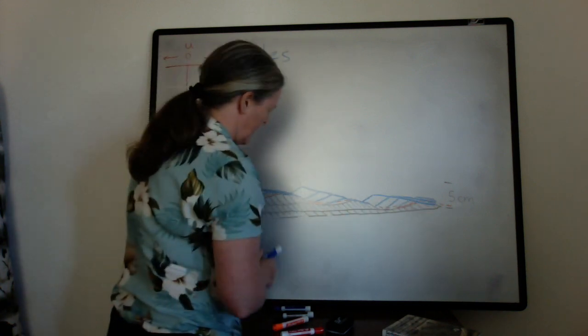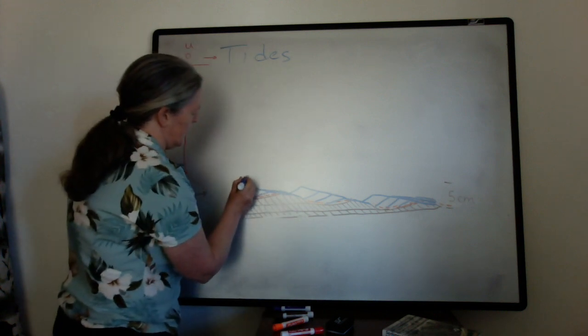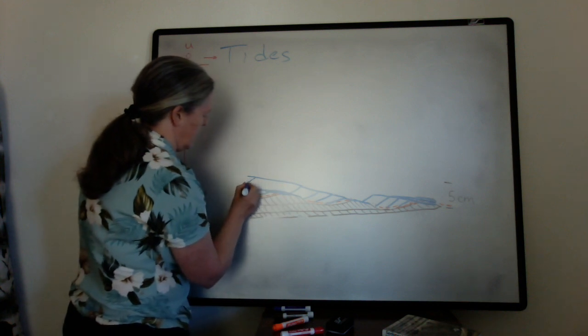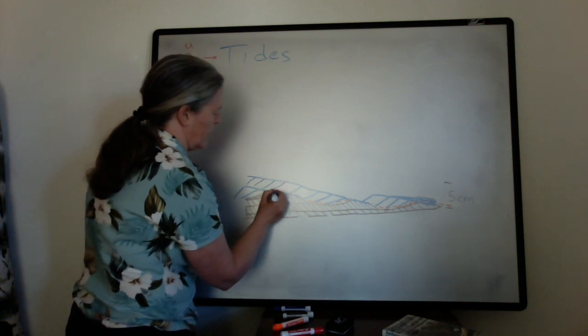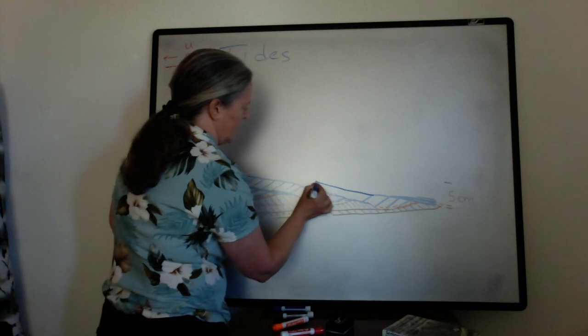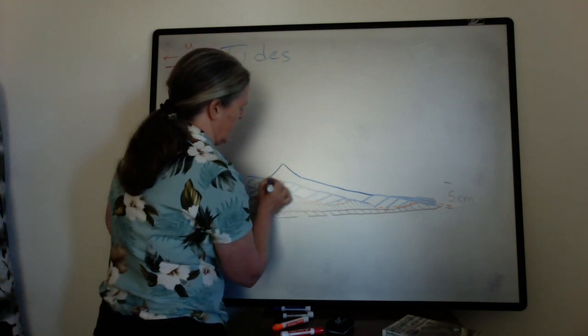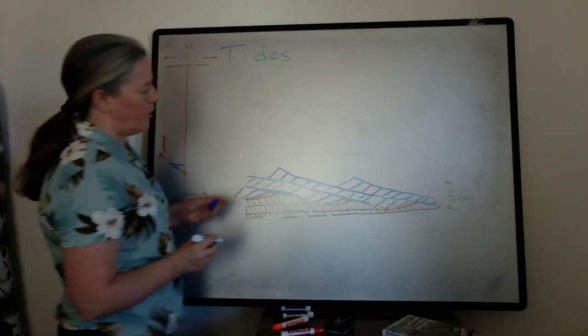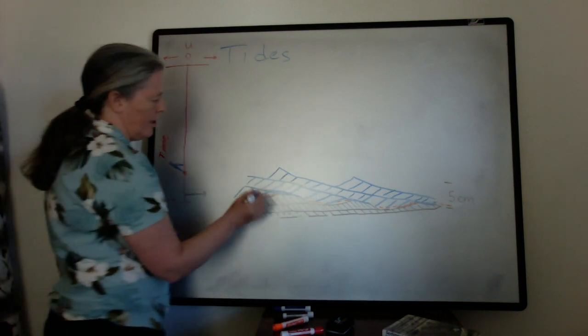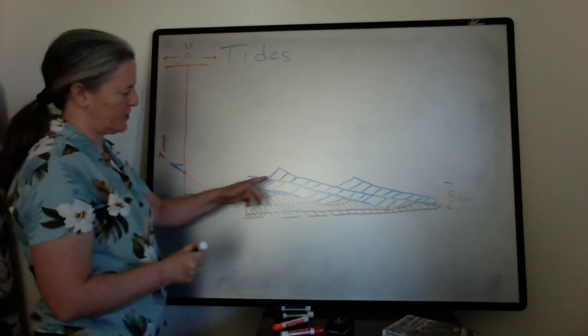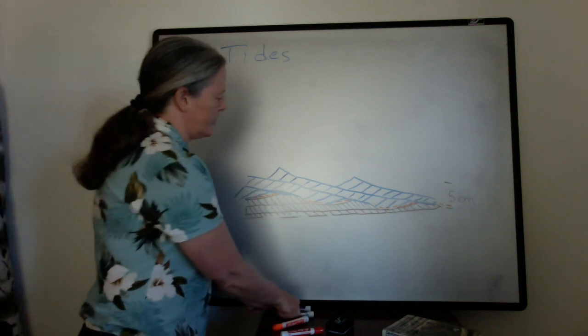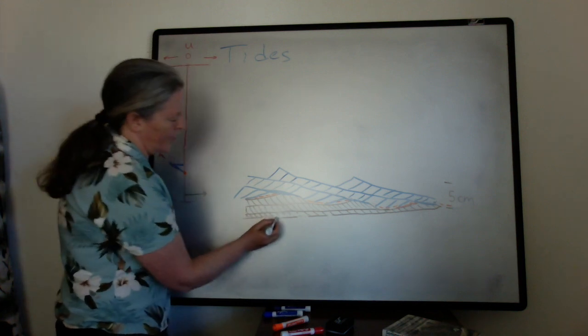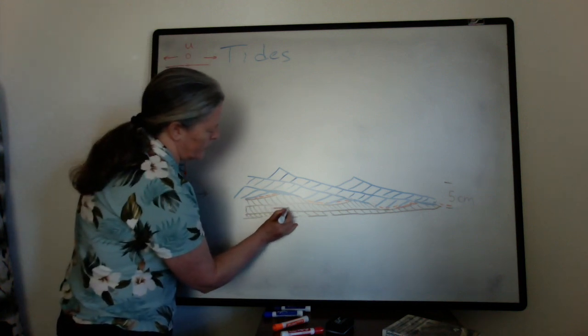Eventually what happens is you get ripple cross lamination. So now we have ripples in the sand moving in this direction. If we look at the dip of the lamina here, as I defined it, we see the transport is in this direction.